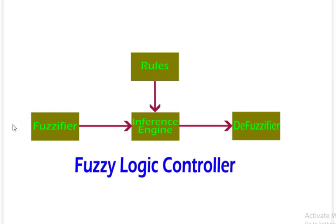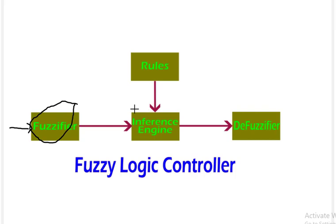This is a simple fuzzy logic controller system. The input comes from the external world as a crisp value, and we need to convert it to a fuzzy value. The fuzzifier converts crisp values to fuzzy values. These fuzzy input values then go to the inference engine, which gets the values from the fuzzifier and matches them against the rules.